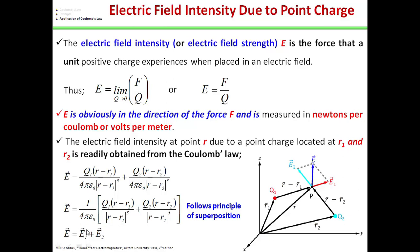Electric field intensity E1 due to charge Q1 is: E1 = Q1(R − R1) / [4πε₀ · |R − R1|³]. Electric field intensity E2 due to charge Q2 is: E2 = Q2(R − R2) / [4πε₀ · |R − R2|³]. The total electric field E = E1 + E2, which is the principle of superposition of electric field vectors at point P due to charges Q1 and Q2.